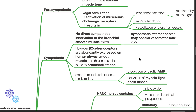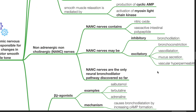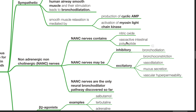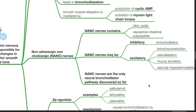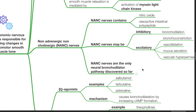Smooth muscle relaxation is mediated by production of cyclic AMP and activation of myosin light chain kinase. Non-adrenergic, non-cholinergic (NANC) nerves contain nitric oxide and vasoactive intestinal polypeptide. NANC nerves may be inhibitory or excitatory. Inhibitory NANC nerves cause bronchodilation, while excitatory NANC nerves cause bronchoconstriction, vasodilation, mucus secretion, and vascular hyperpermeability. NANC nerves are the only neuro-bronchodilator pathway discovered so far.